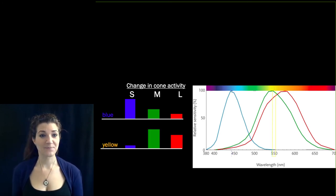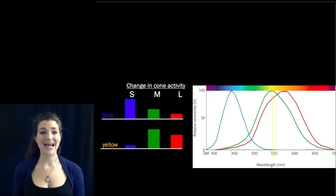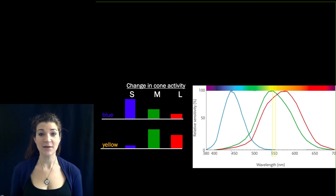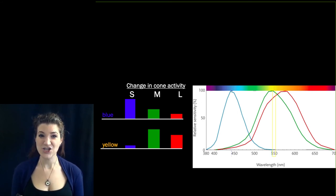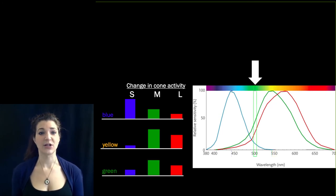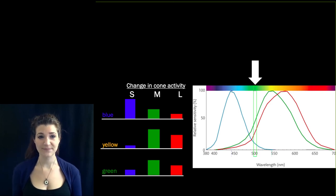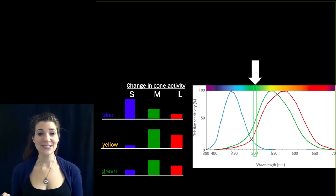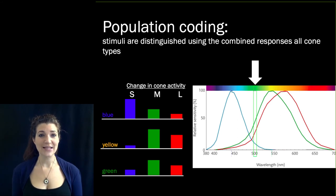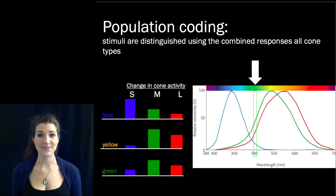Let's try another wavelength. Yellow is coded as the highest stimulation of medium wavelength sensitive cones, moderately high for long wavelength, and very little stimulation of the short cones. Green is similar, but with somewhat lower levels of medium and long, and higher of short. So every point along the visible spectrum provides a different level of activity across the three cone types collectively — referred to as population coding, where information about wavelength and intensity of light is determined by the simultaneous activity of all three cone types together.